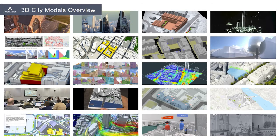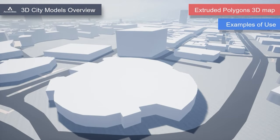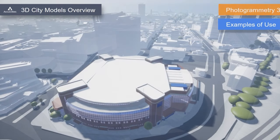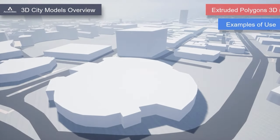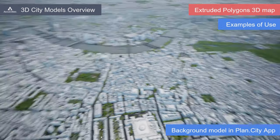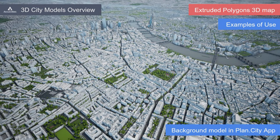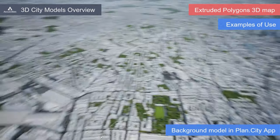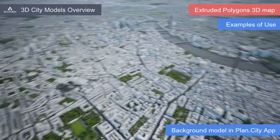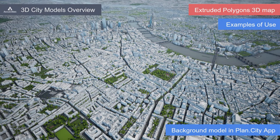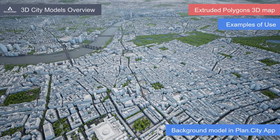We have discussed the advantages and shortfalls of extruded footprint polygon models. Illustrated here on the example of two 3D models of Cardiff, it is crucial for users to understand the limitations of this dataset. However, they are often used as a background model to illustrate the wide area context. Here they are used as a background model supplementing the photogrammetric model in the PlanCity app. Viewed from shallow angles, the line between the two models is all but invisible — can you spot where the photogrammetric model ends and the extruded buildings polygons model begins?